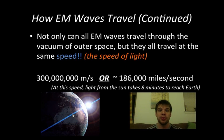Not only can they travel through a vacuum, but they travel at the same speed. There are several different types of electromagnetic waves. They all go the same speed, which is the speed of light. The speed of light is an enormous number, 300 million meters per second, or about 186,000 miles every second.